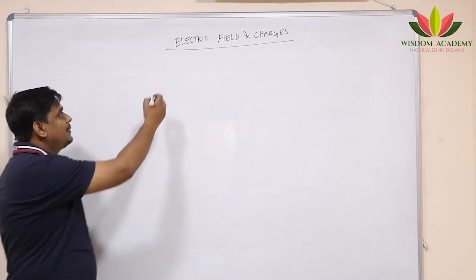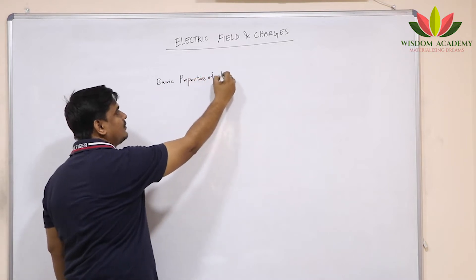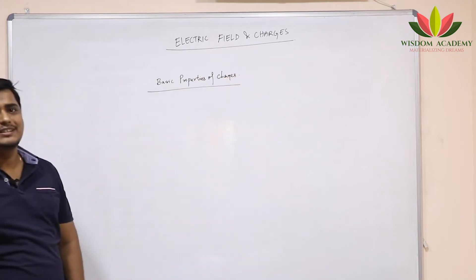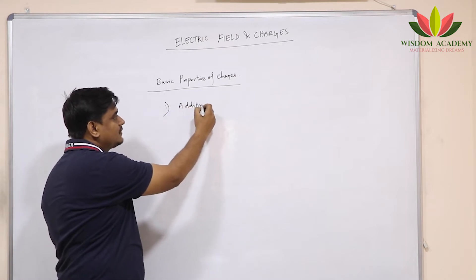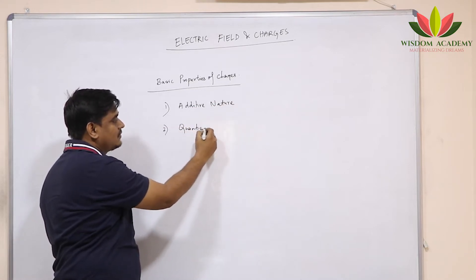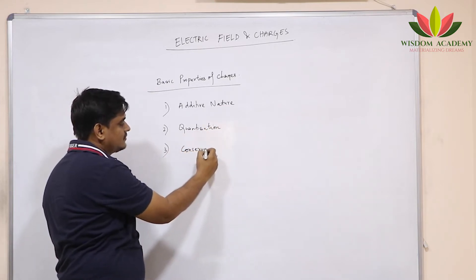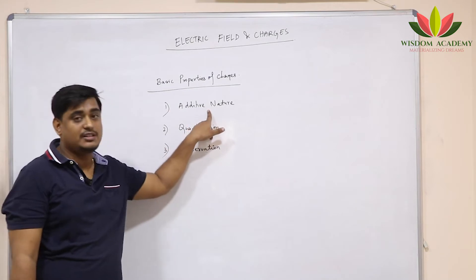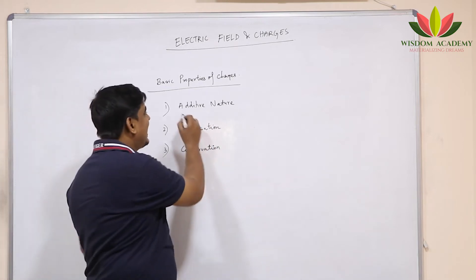Now we will look at the basic properties of charges. There are three properties: the first one is additive nature, the second one is quantization, and the third one is conservation. Let us see these one by one. What is additive nature of charge? It says that on a particular object or surface, if there are n number of charges present, the total net charge on the body will be the algebraic addition of all these charges.